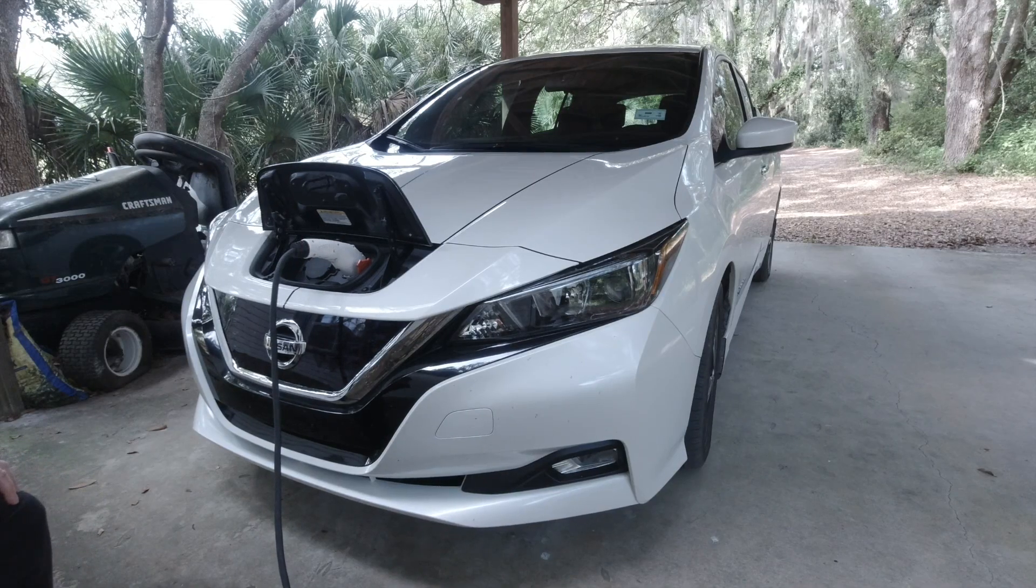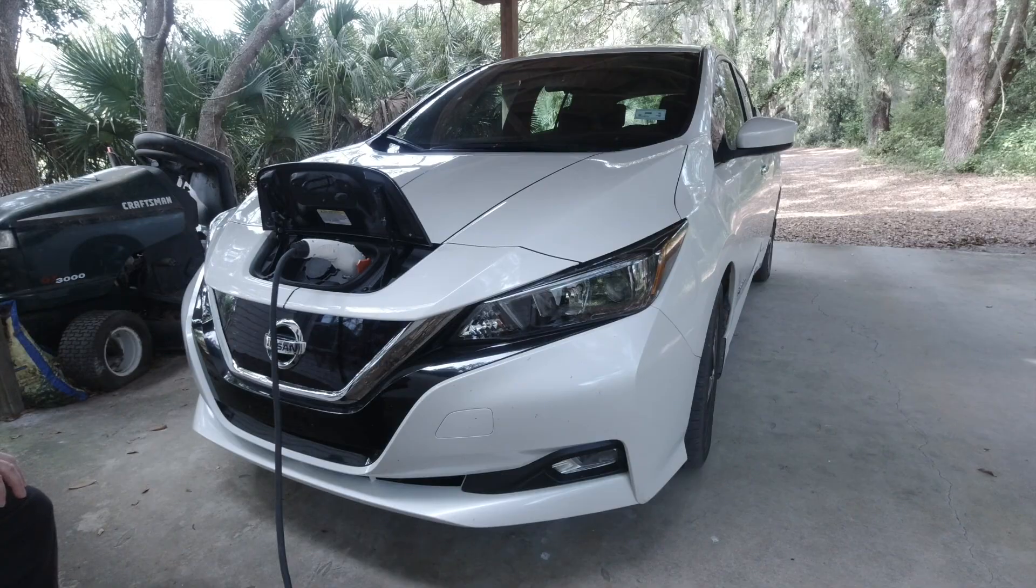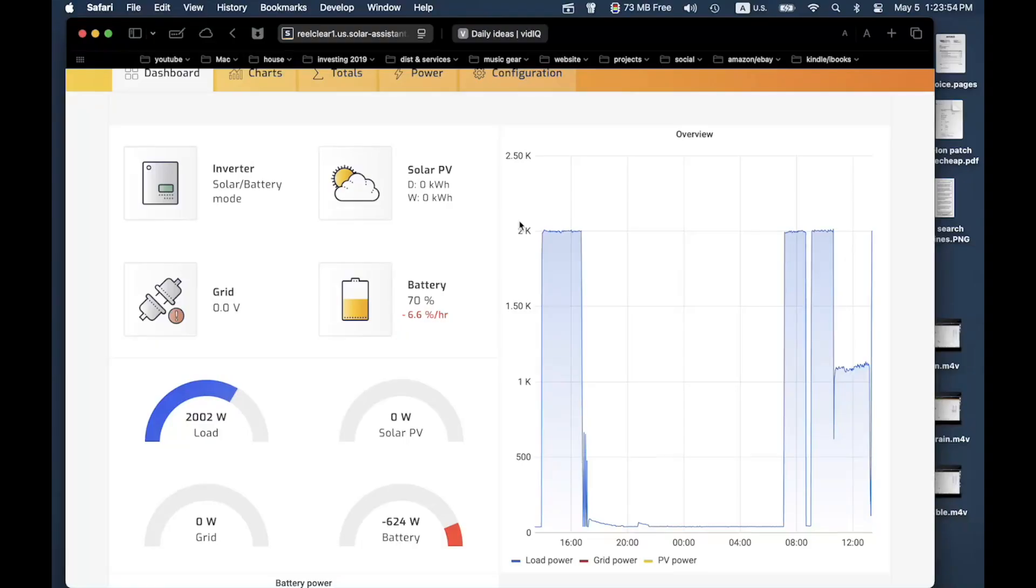So, even though it's cloudy, I'm still charging my Nissan Leaf at level 1. It's drawing about 1,800 watts. You can see that all of the circuits, the EV and a few computers and things, are drawing about 2,000 watts. And I'm pulling a couple of hundred watts off of the battery here.